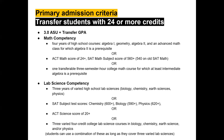Primary admission criteria for students with 24 or more college credits: you must have a transfer GPA of at least 3.0, and you must not be missing any math or lab science competencies. For math, that is four years of high school math or one transferable three-semester-hour college math class for which at least intermediate algebra is a prerequisite. For lab science competencies, we are looking for three varying high school lab sciences — a full year of each — or three varying college-level four-credit lab sciences.